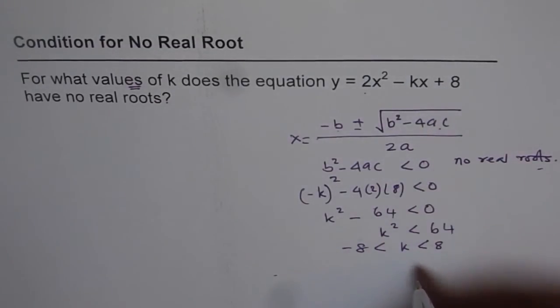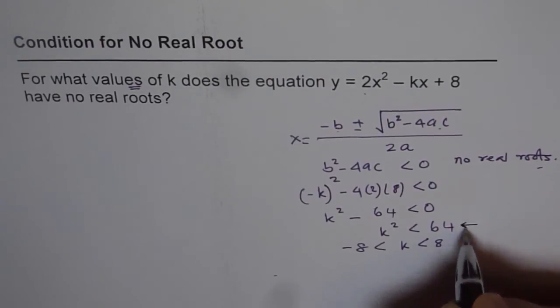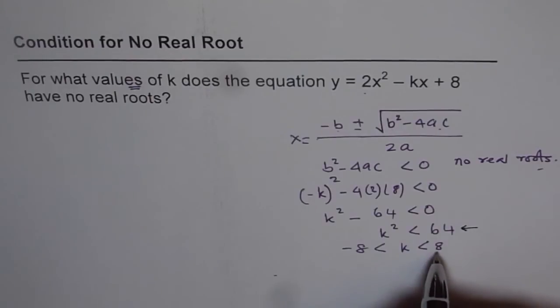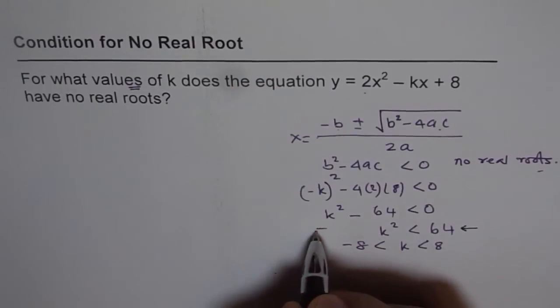So my suggestion is, write on your answer, and this inequality here is kind of tricky. When you have k² < 64, solving it means k is between -8 and +8. Absolute k is less than 8. So that is how you have to see this equation.